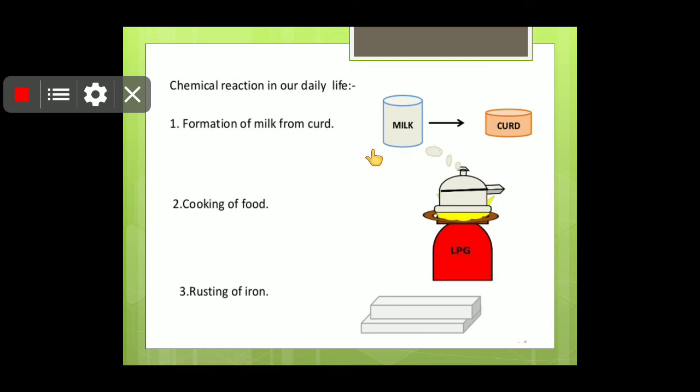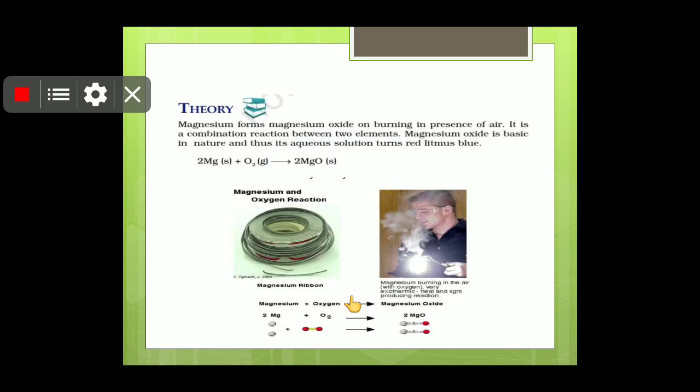So here some few more examples are also given. Milk when converted into curd. Like students, milk could be converted into curd, but if it is curd, we cannot do milk from it. Cooking of food, once you cook the vegetables, you cannot get back the raw vegetables from that dish. Now rusting of iron. So once the iron got rusted, it could not be replenished.